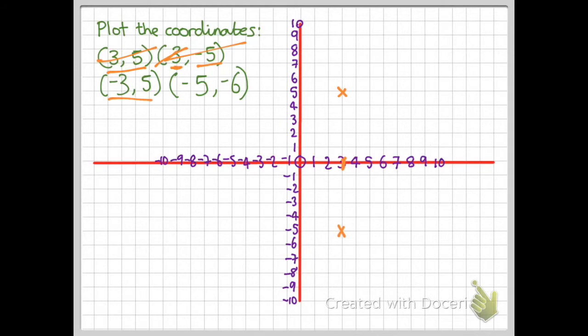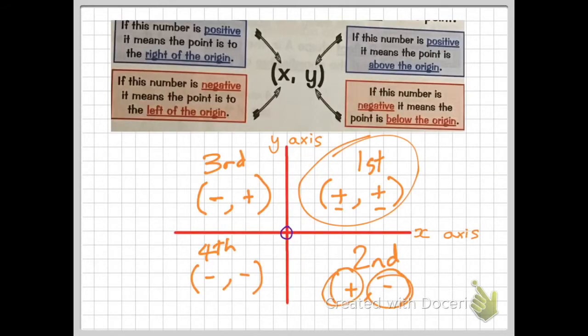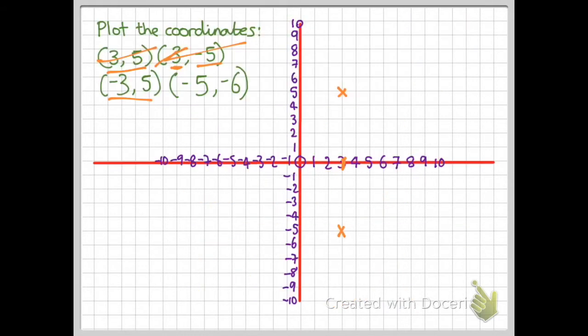Now my third coordinate says minus 3. So my first number is a negative number. My second number is a positive number. So if I have a negative and a positive number, then I'm going to be in the third quadrant. So I'm going to go across to minus 3. So that's here. Then I'm going to go up to where 5 is because it's a positive number.